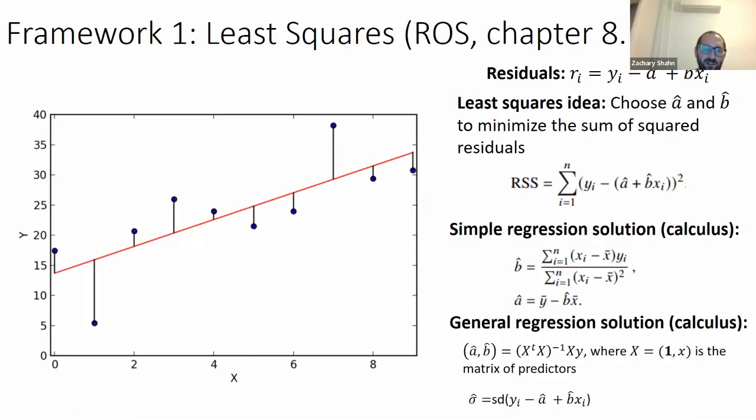I think this is intuitive, right? That would be a good way to find the line that's the best fit to the data is to just minimize the squares of these distances. You want to minimize, find the a hat and b hat that gives you the smallest sum of squared residuals.